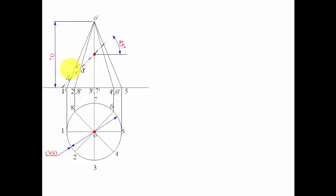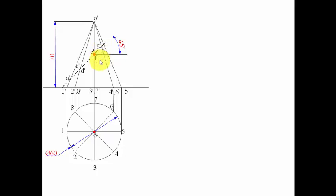For generator O3 at the front and O7 at the back, we get cutting points E and F. For generators O4 and O6 we have cutting points G-dash and H-dash. And the lone generator O-dash 5-dash has its own cutting point.